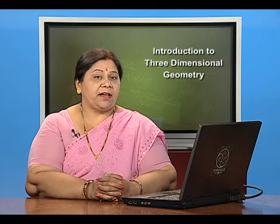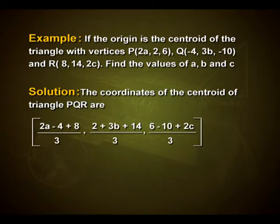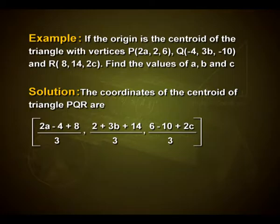As we know, the centroid is the point where all 3 medians of a triangle meet. The coordinates of the centroid of triangle PQR are (2a−4+8)/3, (2+3b+14)/3, (6−10+2c)/3, that is (2a+4)/3, (3b+16)/3, (2c−4)/3.